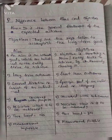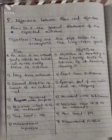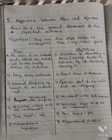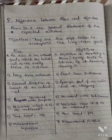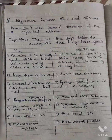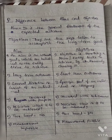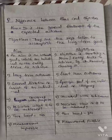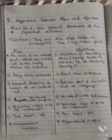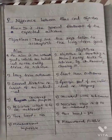Aim describes what is to be achieved, and objective describes how it is to be achieved. Aim has no time bound, whereas objective has a time bound. Aim is impossible to measure, while objective can be measured.